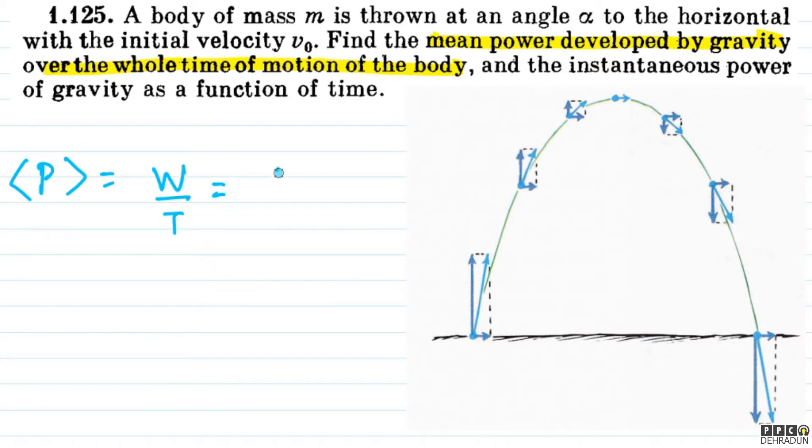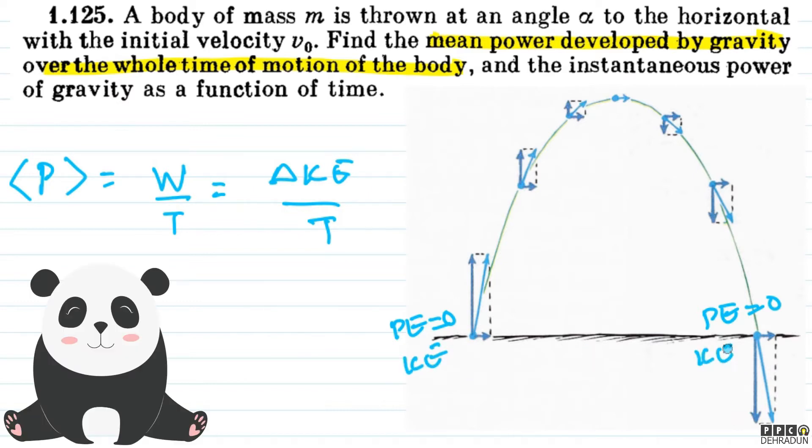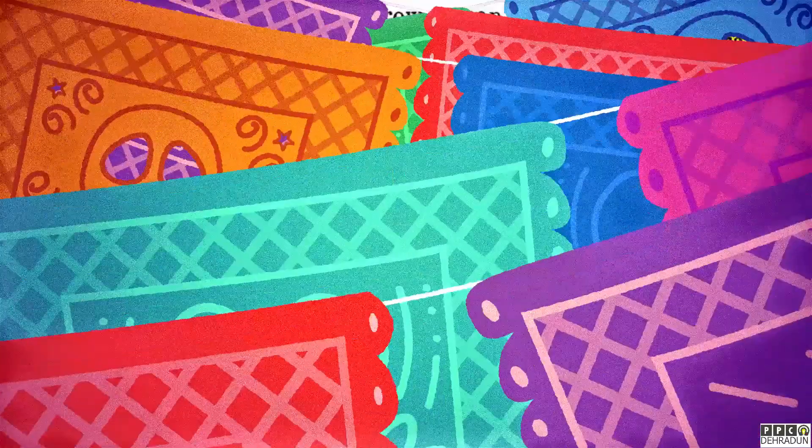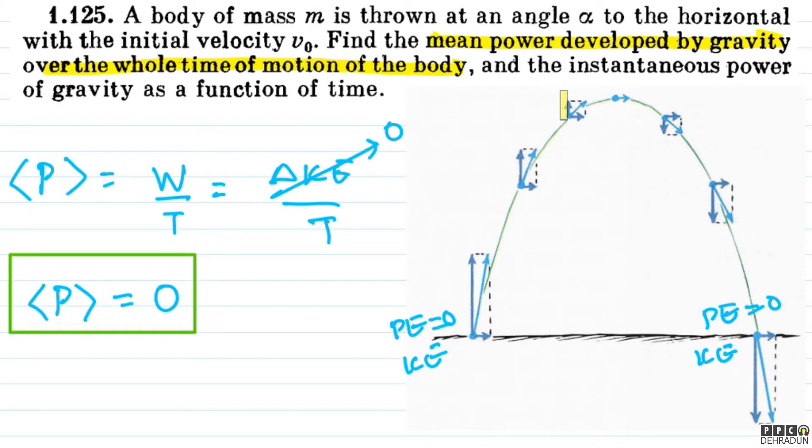We can write mean power as delta KE over time taken. But if we look at energy conservation, since there are no dissipative forces, the initial kinetic energy equals the final kinetic energy. So delta KE is exactly zero. This is why the mean power developed by gravity over the whole time of motion of the body is simply zero. So this is our first part.